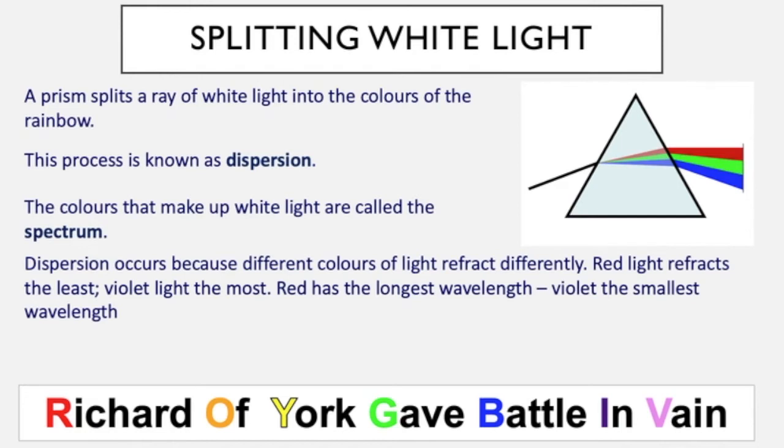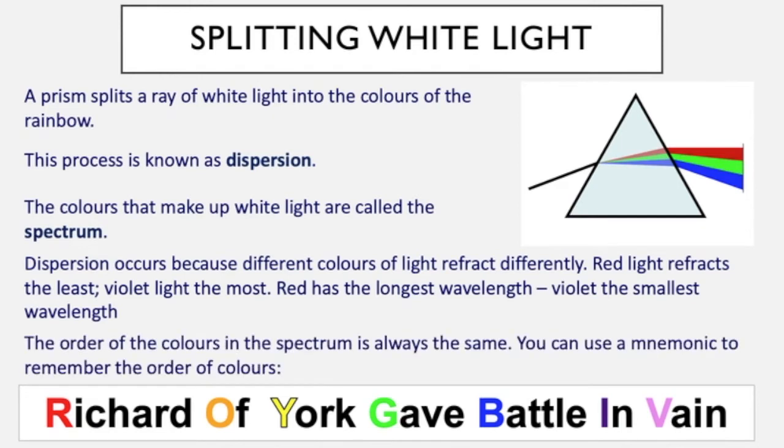Red has the longest wavelength, violet the smallest wavelength. The order of the colors of the spectrum is always the same. You can use a mnemonic to remember the order of the colors, something like this: Richard Of York Gave Battle In Vain. Red, orange, yellow, green, blue, indigo, violet.